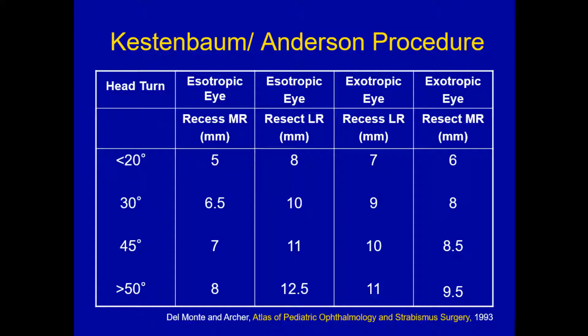The Kestenbaum-Anderson procedure is a well-described and very effective procedure for treating routine null point nystagmus. The way of thinking about this that I like is: when a patient turns their head to the left, then the left eye is in esotropia and the right eye is in exotropia — so you've got an ET and an XT. The adducting eye is almost always the dominant, fixing eye.